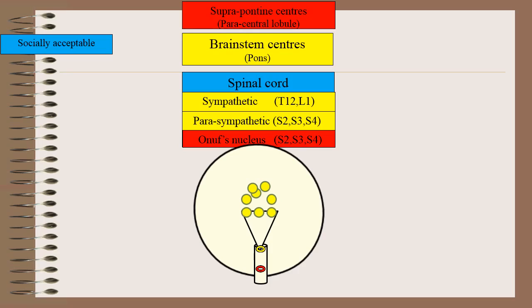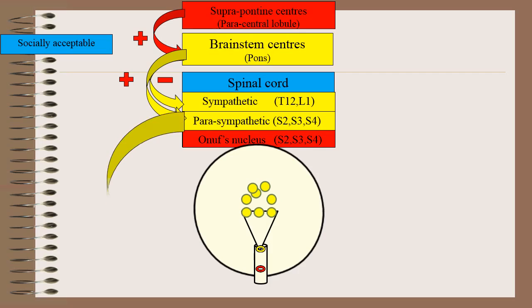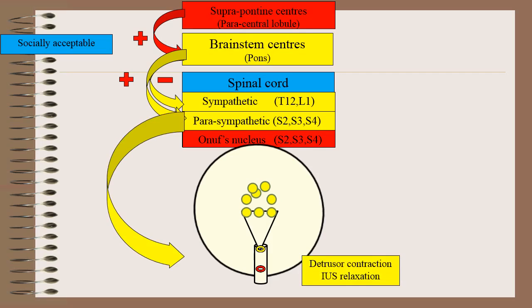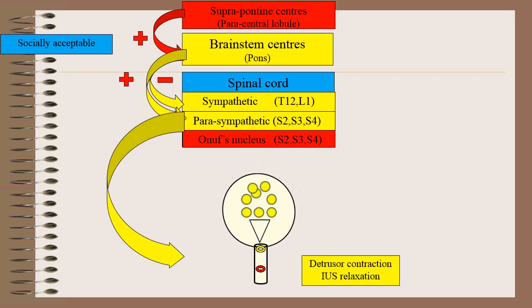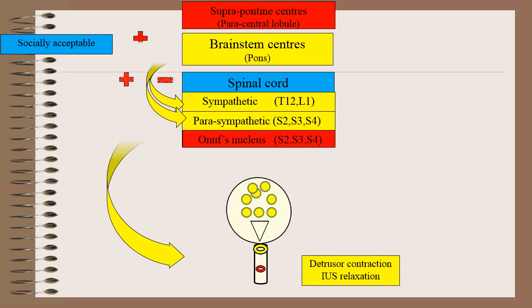Now, if it is socially acceptable to void, the suprapontine center causes facilitation of brainstem centers. The brainstem center in turn causes inhibition of the sympathetic and facilitation of the parasympathetic center. The parasympathetic center causes detrusor muscle contraction and internal urethral sphincter relaxation.